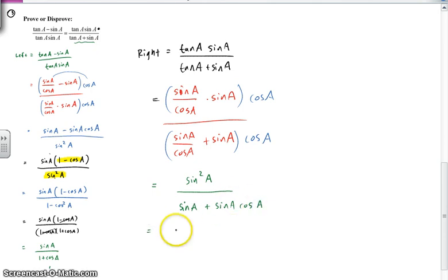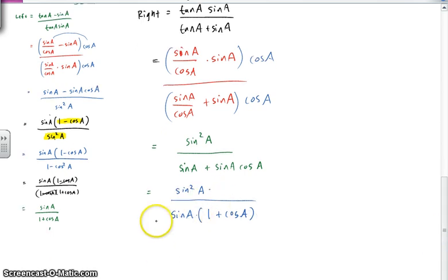Now I'm going to factor the bottom. I'm going to factor out a sine A. So I get 1 plus cosine A. Okay, now I have a sine A at the top, I have a sine at the bottom. That's going to give me - one of those is going to cancel. So I get sine A over 1 plus cosine of A. Well, look at this. When I worked on the left side, I ended up with that. When I worked on the right side, I ended up with that. So now the left side is equal to the right side.